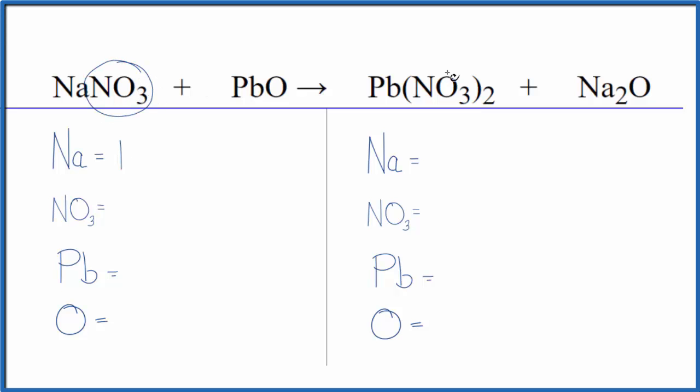We're going to count this nitrate as one thing. We have it here and then over here - that makes balancing equations a lot easier, it saves you time which is important on a test. So we have just one nitrate ion here.